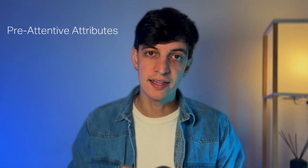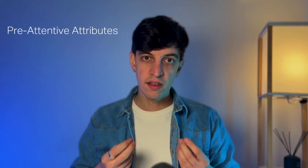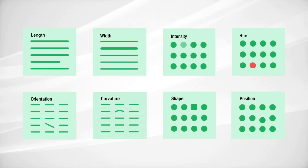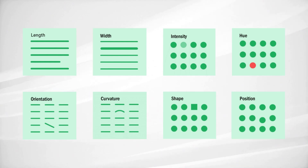Research shows that visual information is processed more easily and stays with us longer compared to text. Something else that is very fascinating is what is called pre-attentive attributes — things that make it easy for us to process and retain information more quickly and easily. Pre-attentive attributes are the building blocks of data visualization, and these include things like length, width, intensity, hue, orientation, curvature, shape, and position.